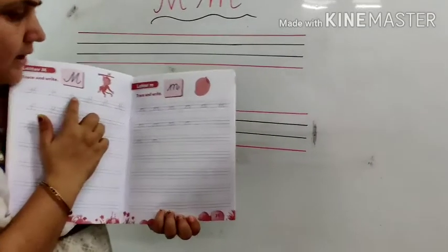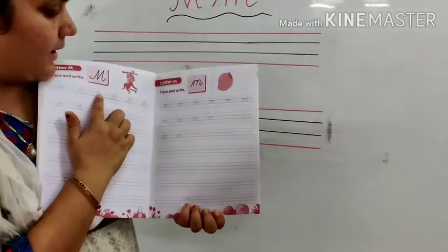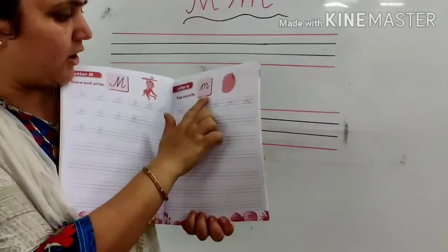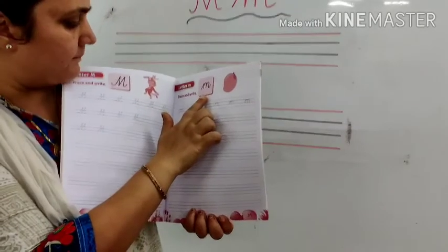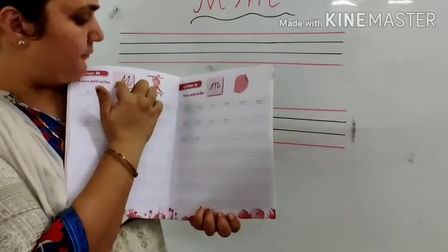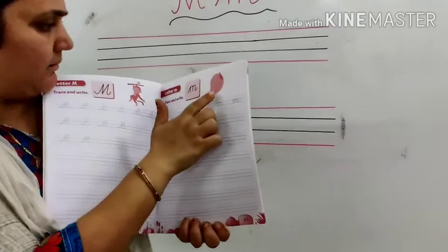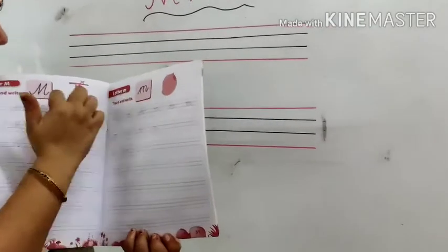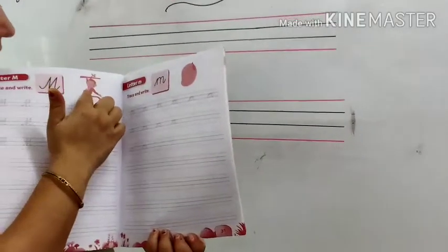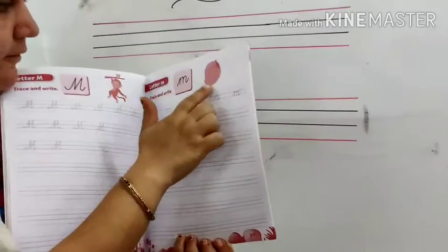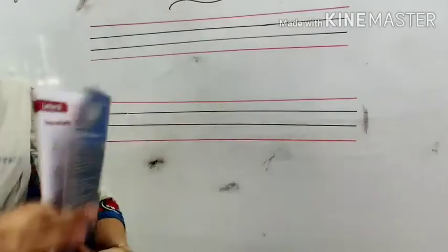Today we will learn capital cursive M and small cursive M. M for monkey, M for mango. Clear.